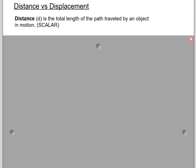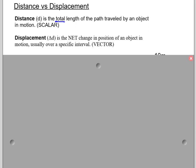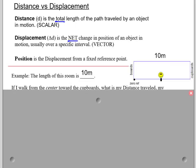Distance is the total length of the path traveled by an object in motion. That's the total length, and it's a scalar. It doesn't have direction. Displacement, Delta d, notice a little delta sign up front, is the net change in position of an object in motion, usually over a specific interval, and it's a vector. So right away we already have some distinguishing features. Distance is a scalar, displacement is a vector.